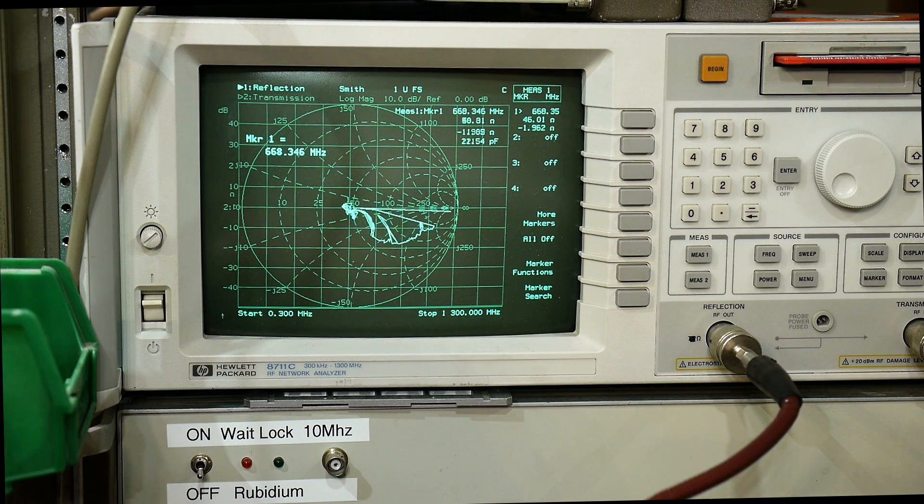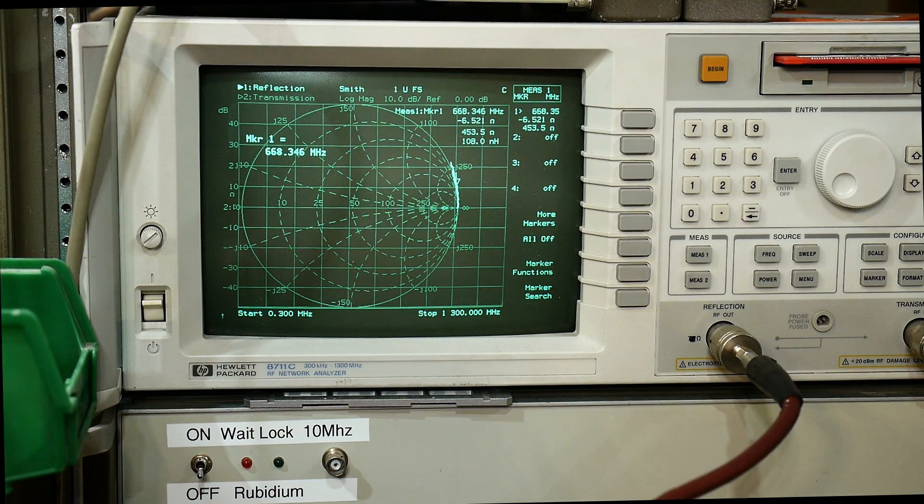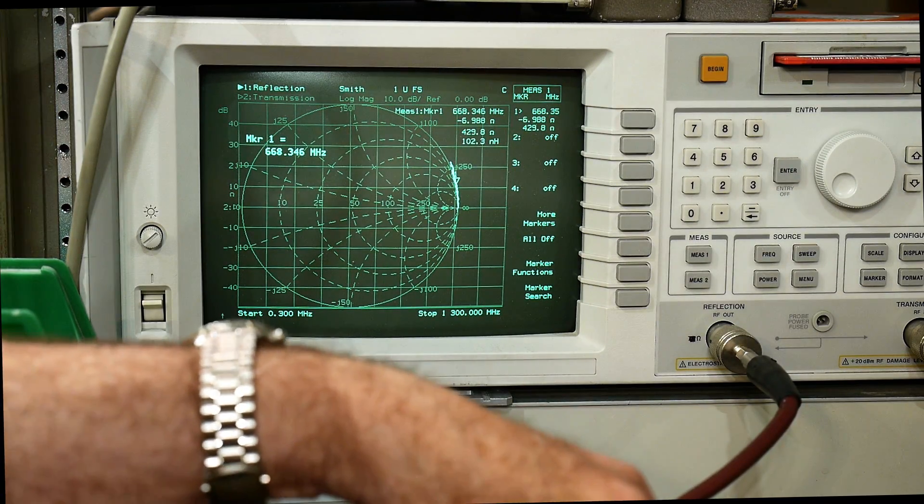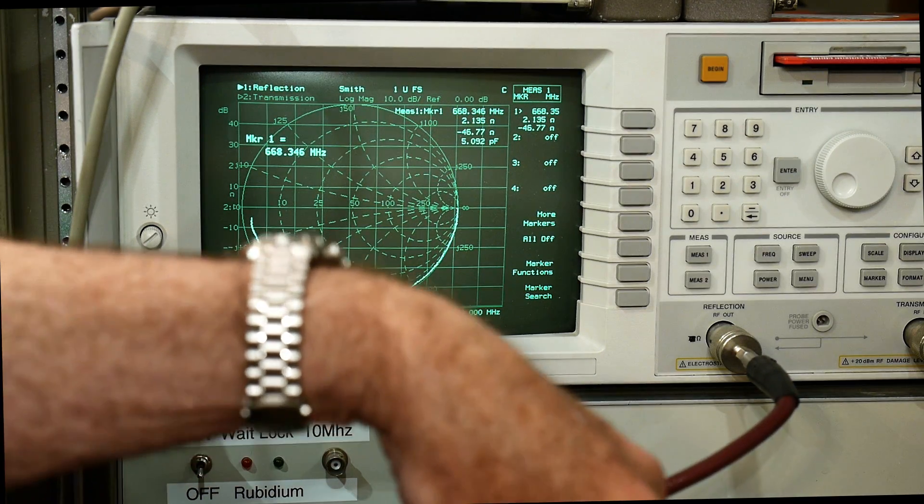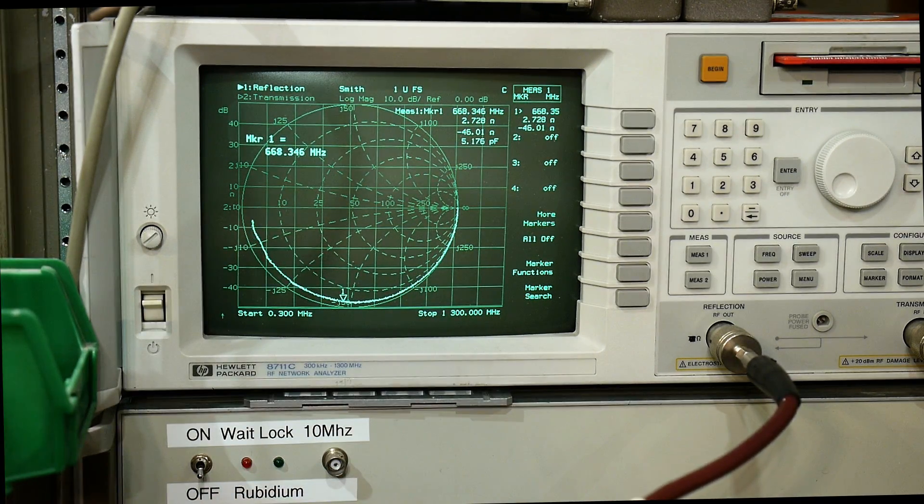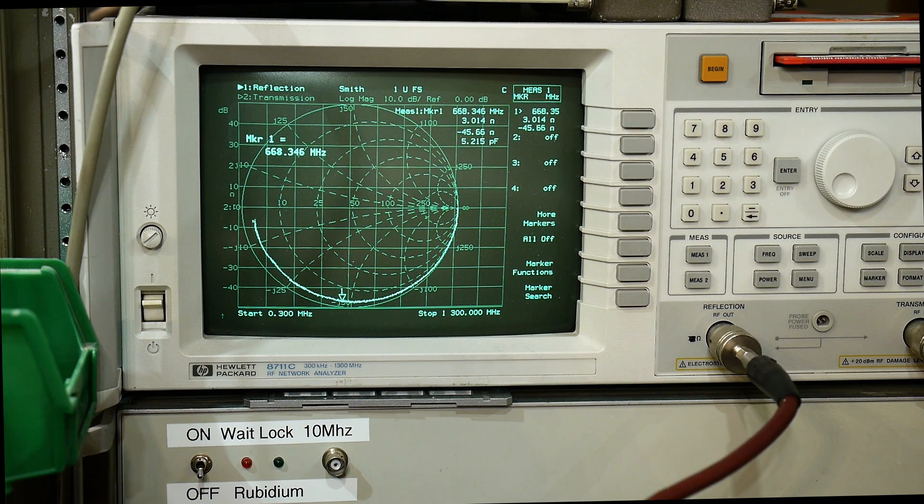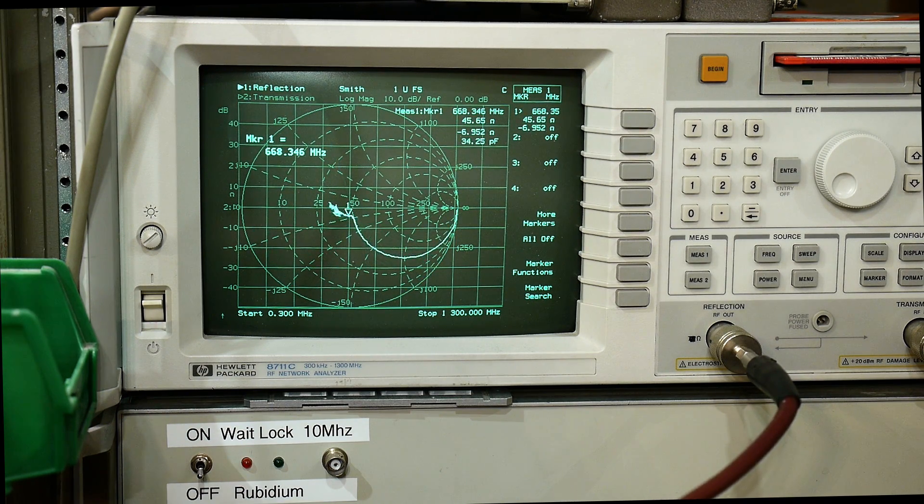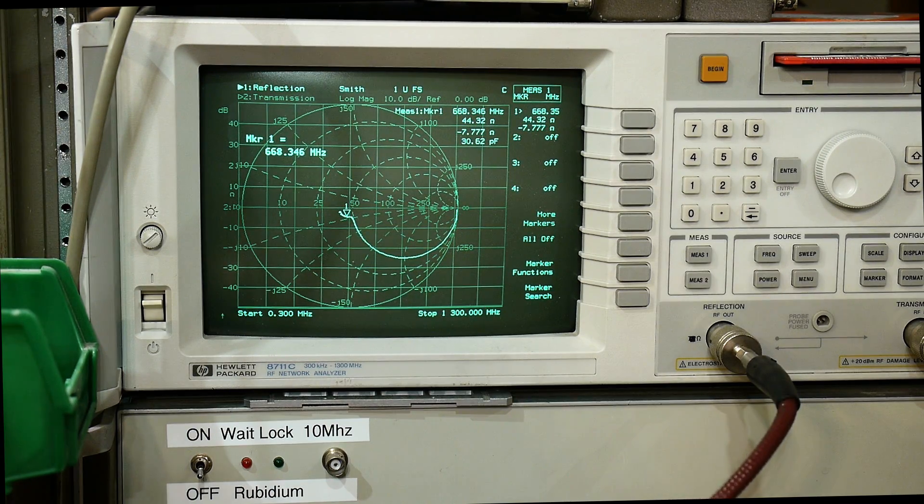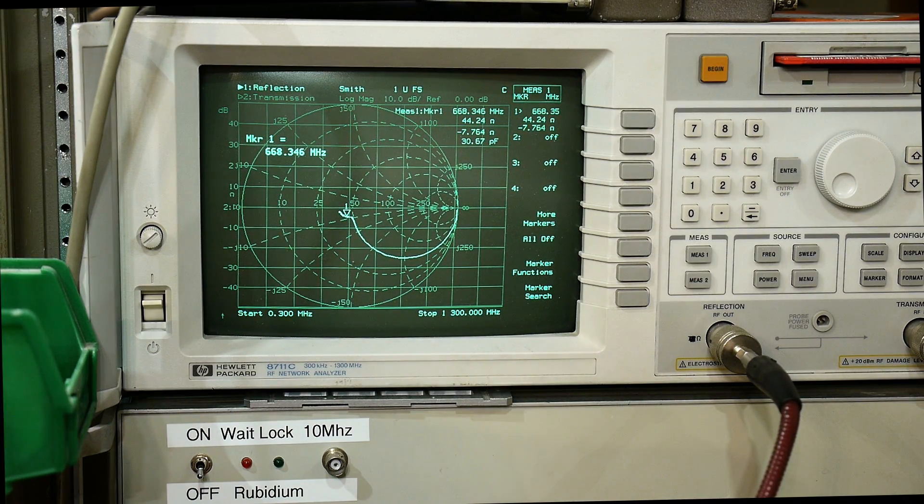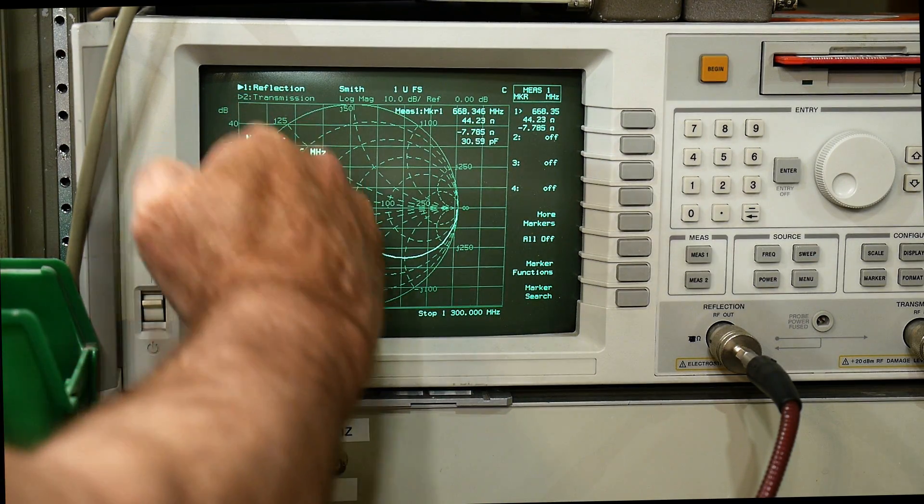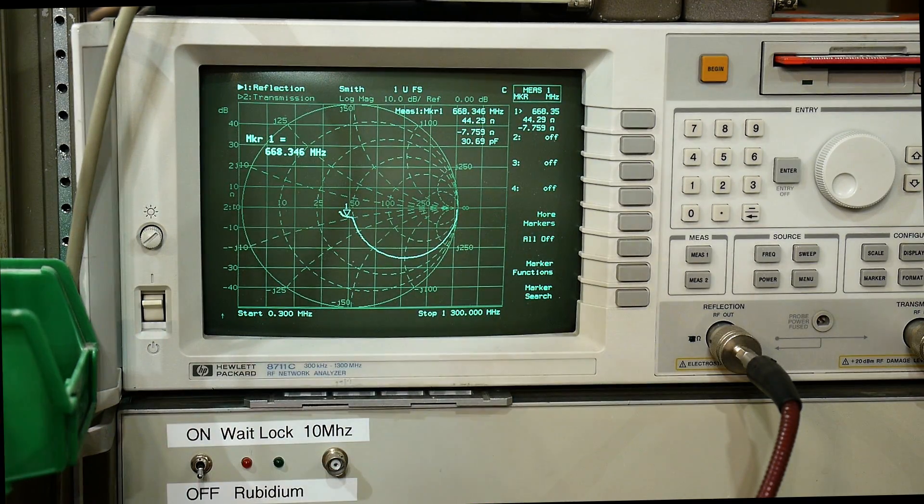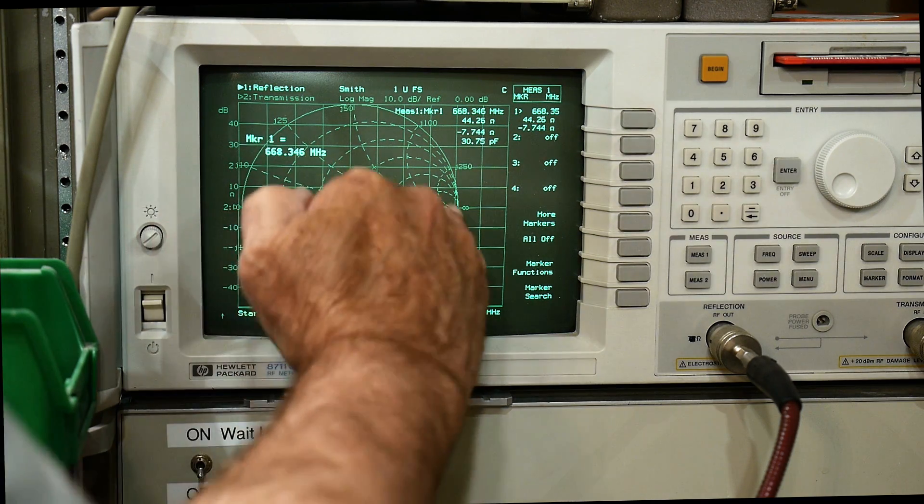So while we're here, let's measure the, just for fun, let's measure our 100 picofarads in series. I will terminate the other end, so now we have a 100 picofarad in series with the 50 ohm load. And we're getting a line that we would expect, right? We are traveling, oh I don't remember what these lines are called, but we're traveling along a line of constant reactance. So we have constant reactance.